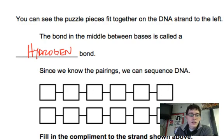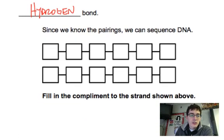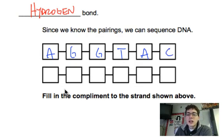Since we know the pairings, we can sequence DNA, and you did this in the lab that we worked on in class. But if I give you a basic sequence like A, G, G, T, A, C, you should be able to write in the complement strand, and that's pretty much all DNA base pairing is.